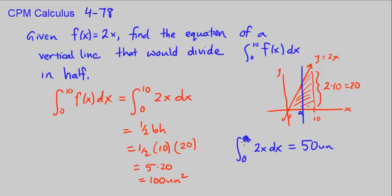0 to a, we know this is just going to create a triangle with this area. The base is going to be a. The area equals 1/2 a times the height, which is just going to be plugged into our equation, 2a.